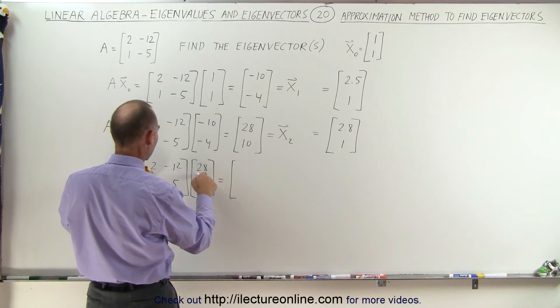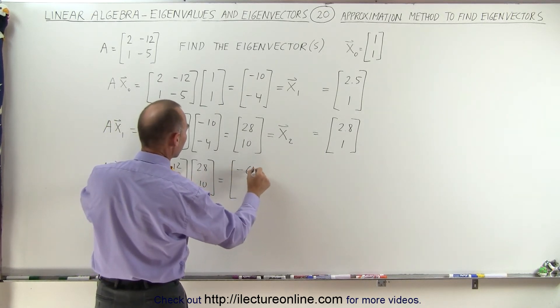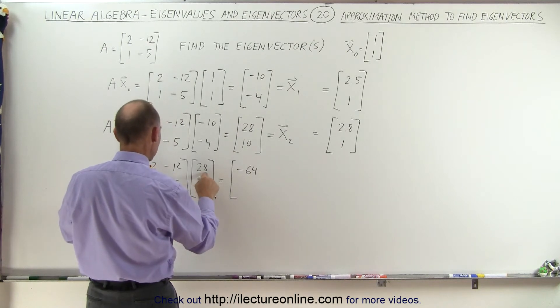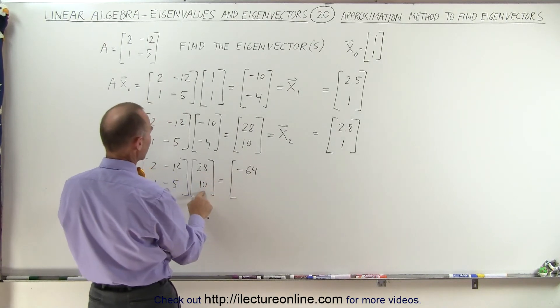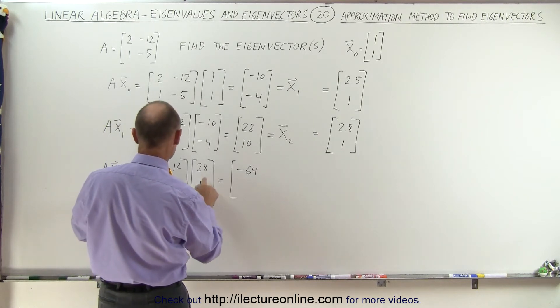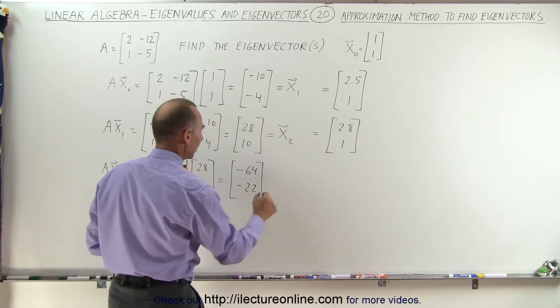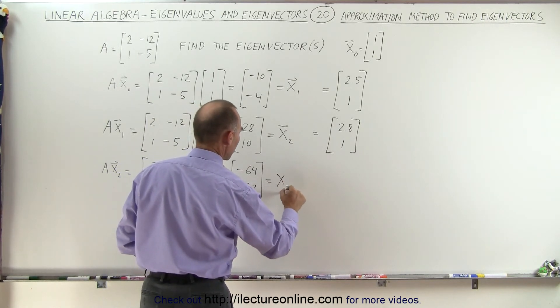We have 56 minus 120, that's minus 64. And here we have 28 minus 50, that's minus 22. All right, that is equal to x3. Of course, if I continue the process, I would have A times x3 and so forth.